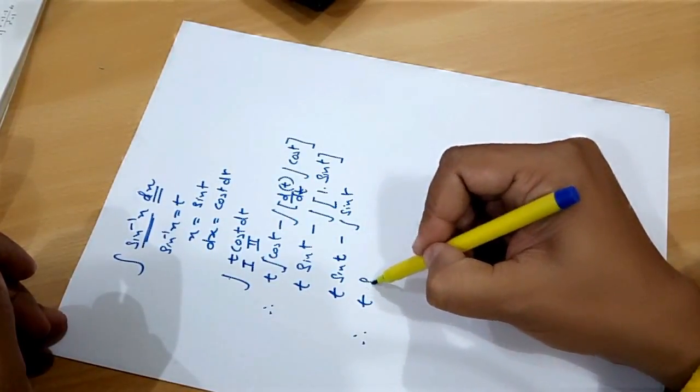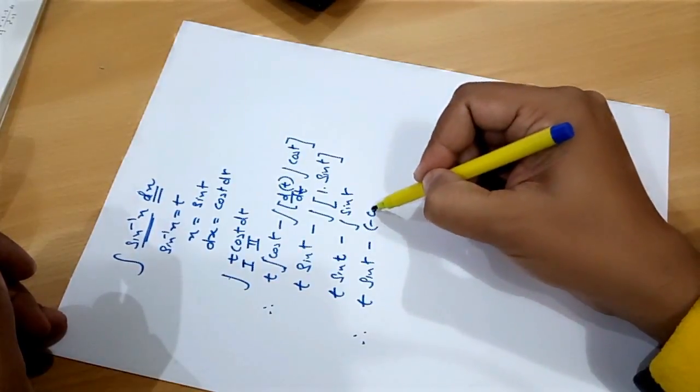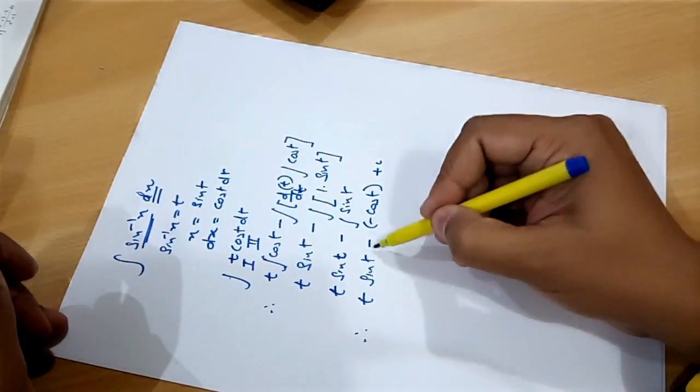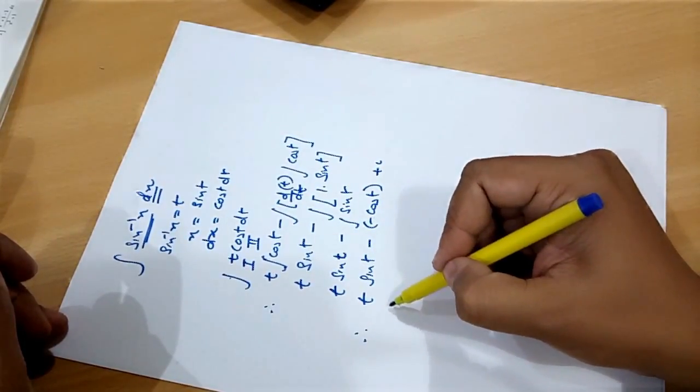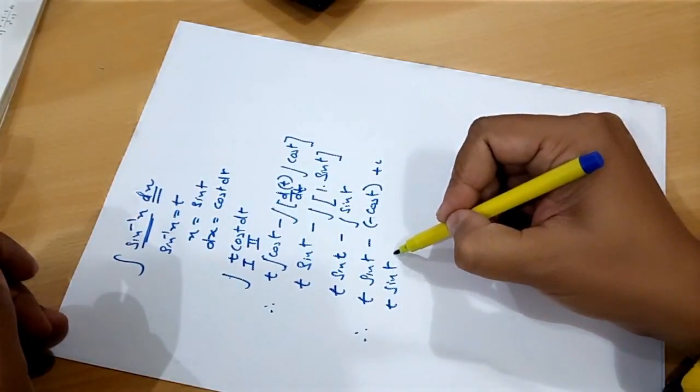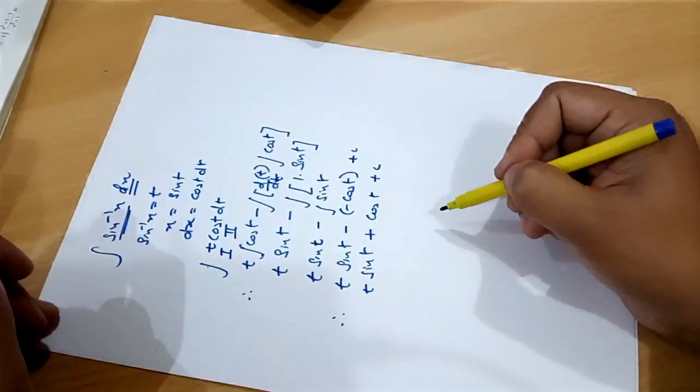Therefore, t sine t minus bracket cos t plus c. So, this minus and this minus and this minus will become plus t sin t plus cos t plus c.